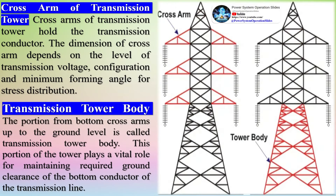The cage of the transmission tower is the portion between the tower body and the peak, and this portion holds the crossarms. The crossarms of the transmission tower hold the transmission conductor. The dimension of the crossarm depends on the level of transmission voltage, configuration, and minimum forming angle for stress distribution.